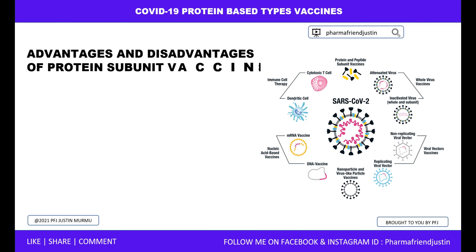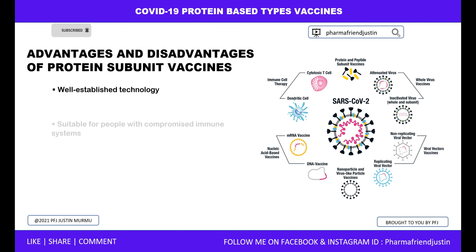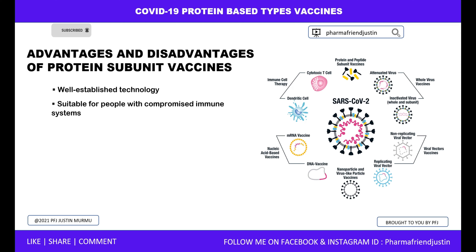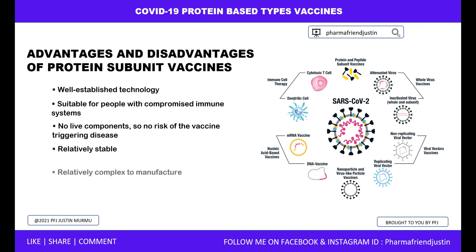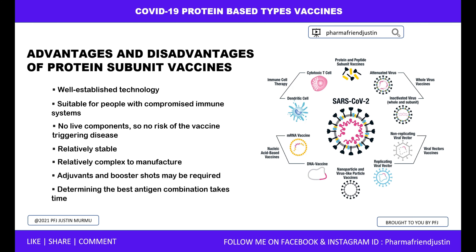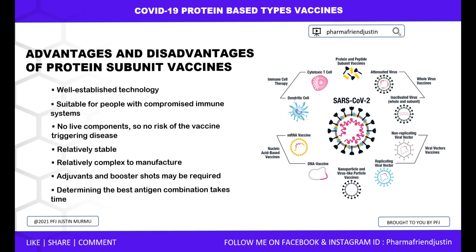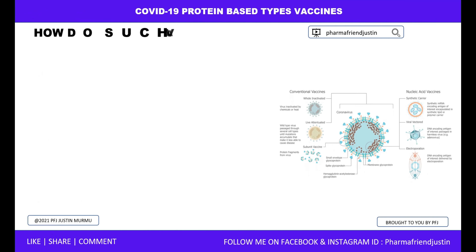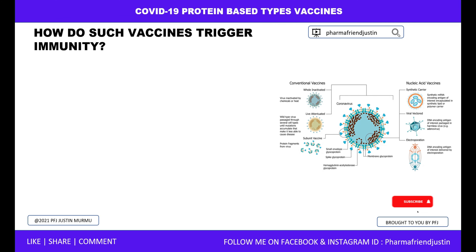What are the advantages and disadvantages of protein subunit vaccines? Advantages include well-established technology and suitability for people with compromised immune systems. There are no live components, so no risk of the vaccine triggering disease, and they are relatively stable. Disadvantages include relatively complex manufacturing, and adjuvants and booster shots may be required. Determining the best antigen combination can also take time.